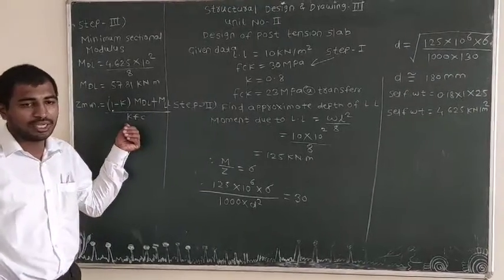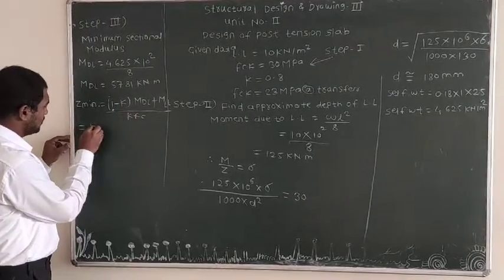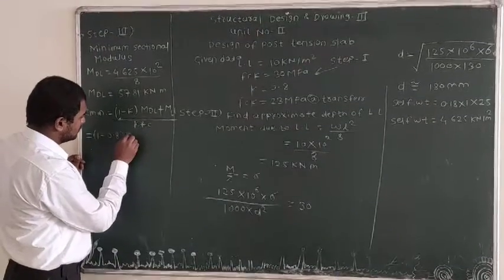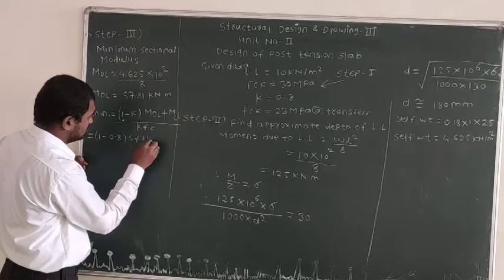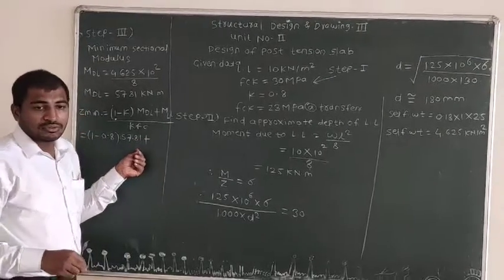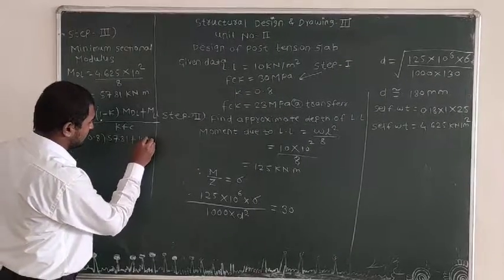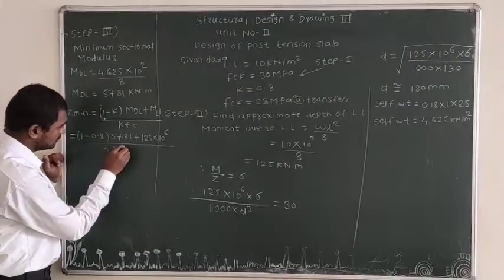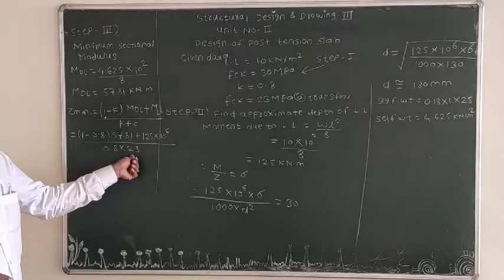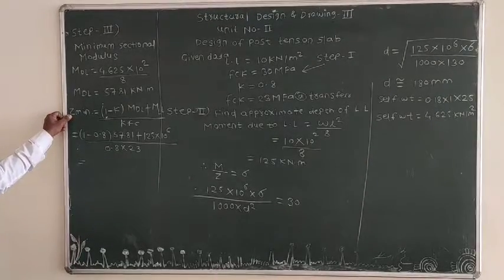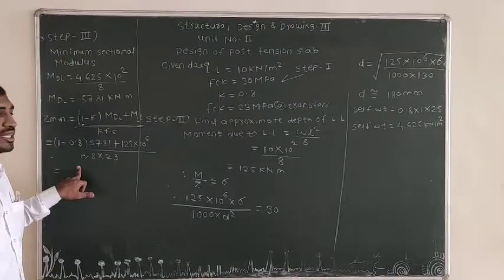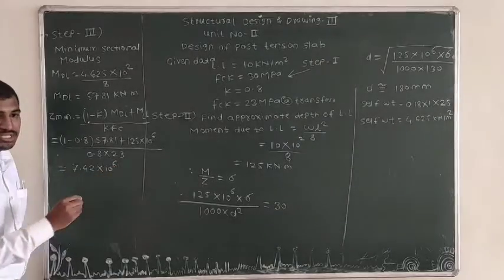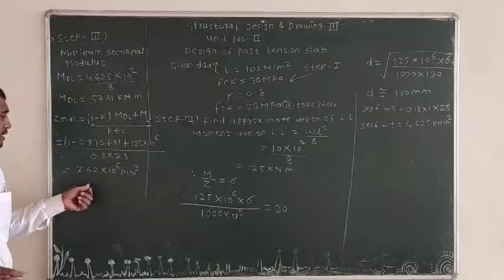Putting values into the Z minimum formula: k = 0.8, MDL = 57.81, MLL = 125 × 10⁶, and fck at transfer = 23 MPa. With k = 0.8 and fck = 23 MPa in the denominator (0.8 × 23), the calculated Z minimum is 7.42 × 10⁶ mm³.